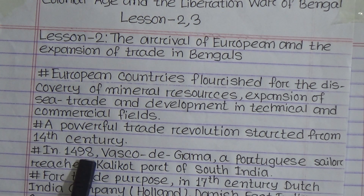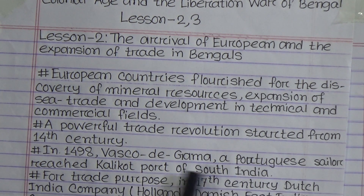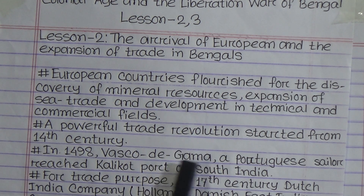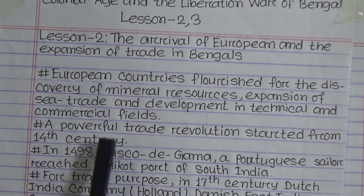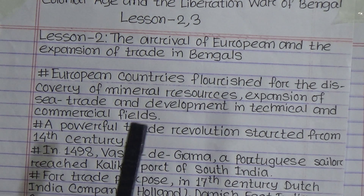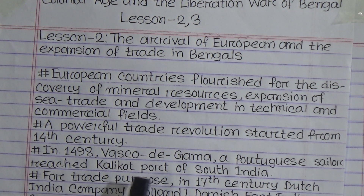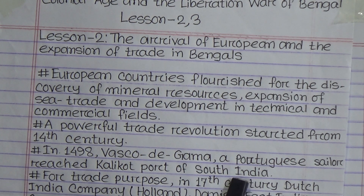In 1498, Vasco da Gama, a pioneering sailor, reached the Calicut port of South India for trade purposes.